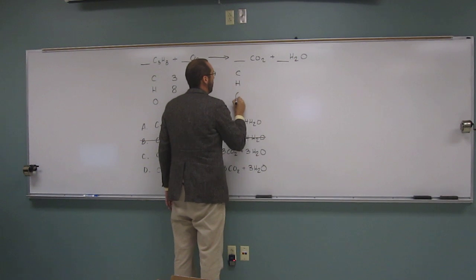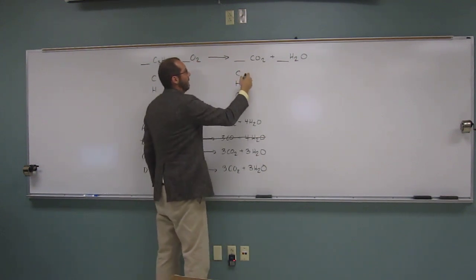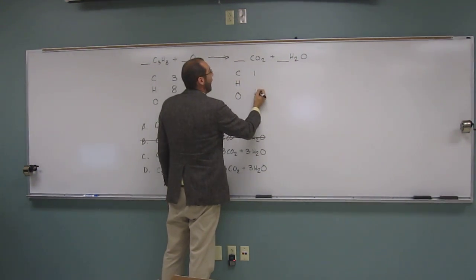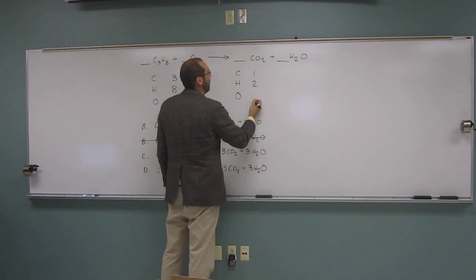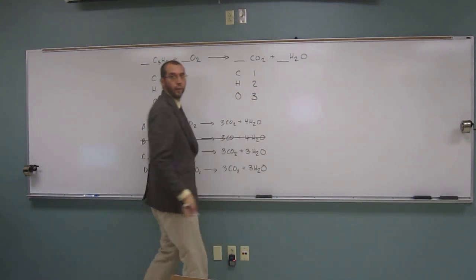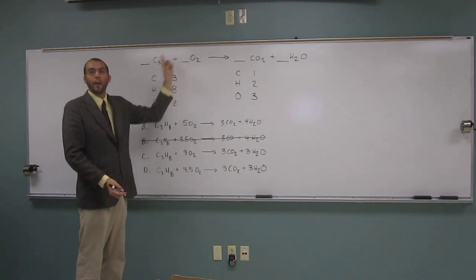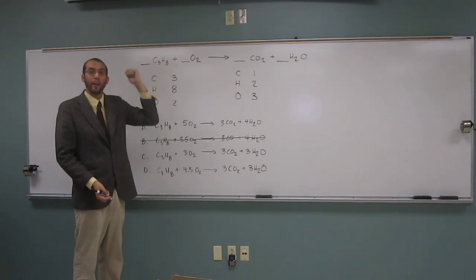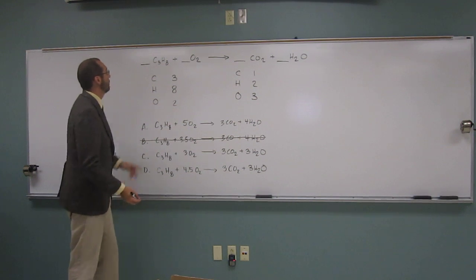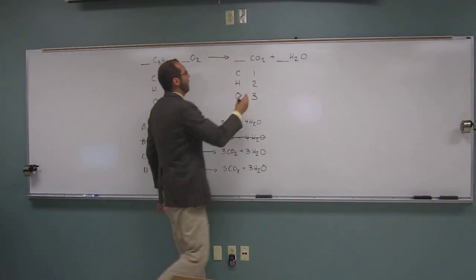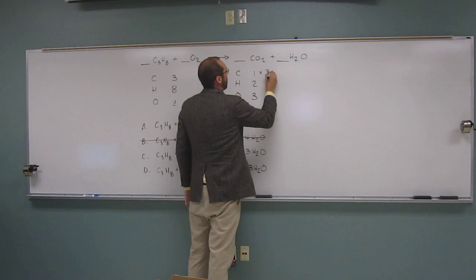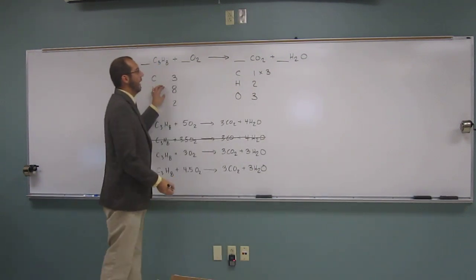C, H, O. So how many C's? One. Just one. H's? Two. Two. And O's? Three. So the first thing we have to do is balance the carbons, then hydrogens, then go over here and then balance back the oxygens. So three. So we're going to want to multiply that by three. Eight.